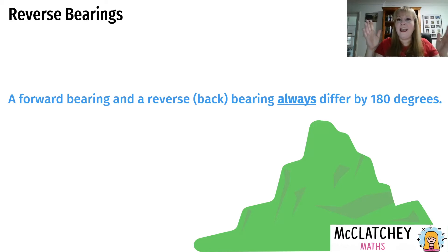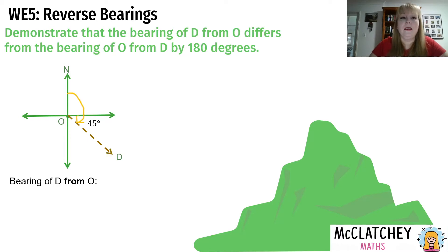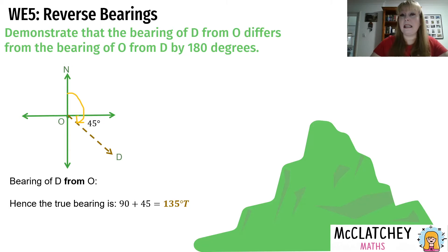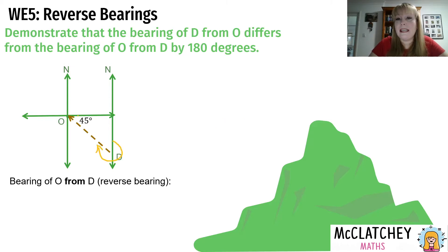Let's prove that the bearing of D from O differs from the bearing of O from D by 180 degrees. With a 45-degree angle shown, the bearing of D from O is north to east (90 degrees) plus 45 degrees, giving 135 degrees true. To find the reverse bearing from D back to O, we add another north line at point D and measure the angle from there — which is clearly a very different angle than when standing at O looking at D.